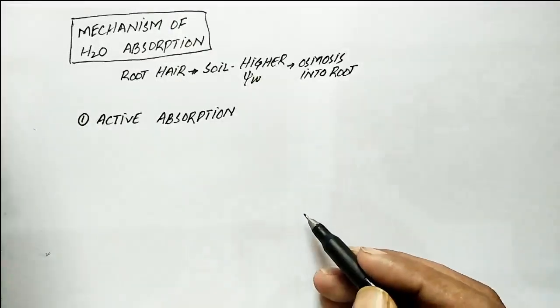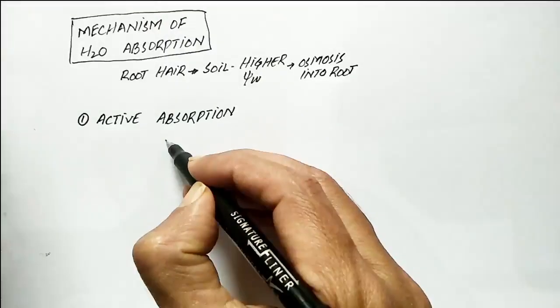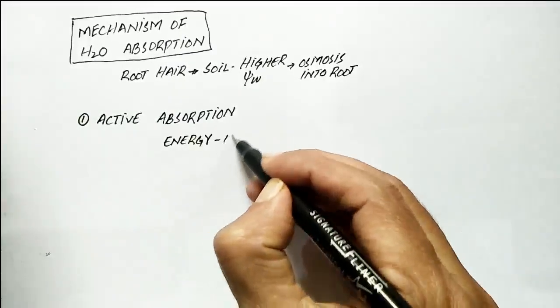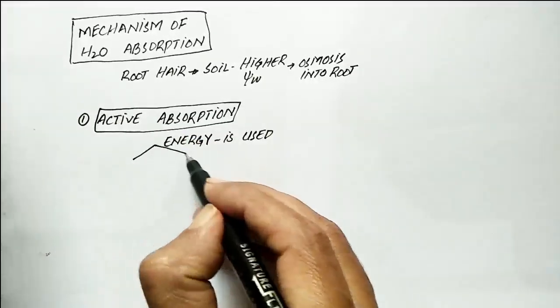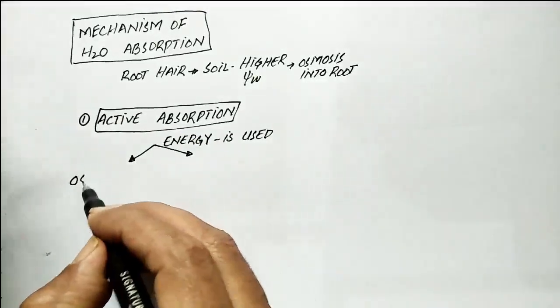One is active absorption of water and the other is passive absorption of water. First we discuss active absorption of water. In this process, root cells play an active role in the absorption of water and metabolic energy is used for this transport. It may be of two types.